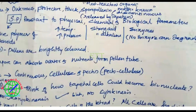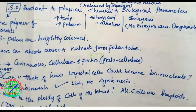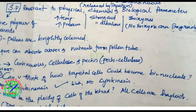Sporopollenin is released by the tapetum layer — the tapetum is the fourth layer in the sporogenous tissue. Sporopollenin is produced from the tapetum layer. It is the most resistant organic matter ever known. Physical, chemical, biological — whatever the parameter, we cannot degrade sporopollenin. High temperature, high pressure, strong acid, strong acetyl material — no enzyme activity can degrade sporopollenin.